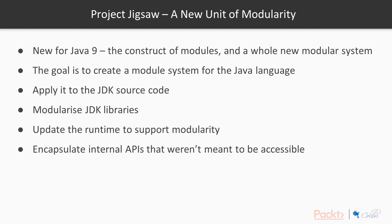They've also updated the runtime to support modularity, so the runtime can detect if there are module conflicts before the application gets executed. This also has a side bonus: when the Java language was built, there were internal APIs that were never meant to be accessible, and there's not really any way to create a private class. Library developers and programmers have started to leverage these internal APIs. What Jigsaw has done is enable the Java development team to hide these away and encapsulate them in a module that doesn't expose that interface.